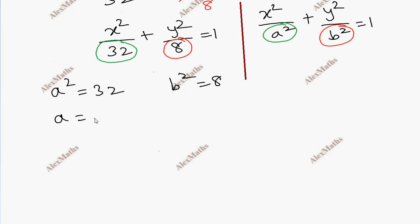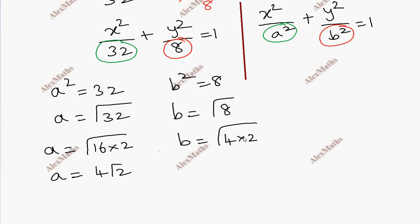So A is √32, which is √(16×2) = 4√2. And B is √8, which is √(4×2) = 2√2.